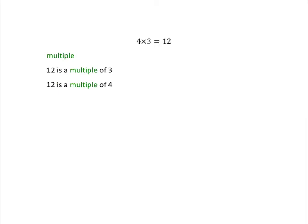The multiples of 4 will be 4, 8, 12, 16, 20, 24, 28, 32, and so on — those are all multiples of 4, because you can get to them by multiplying 4 by a whole number. So that's what a multiple is.